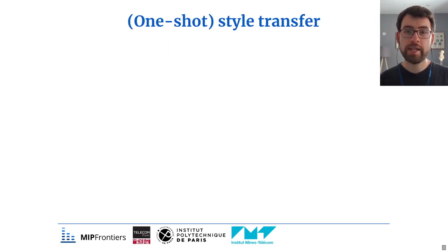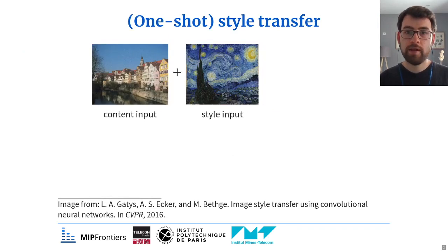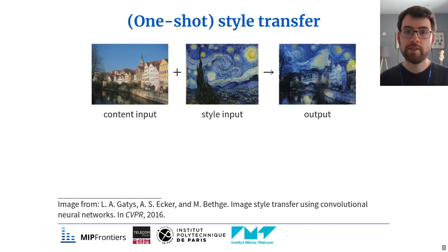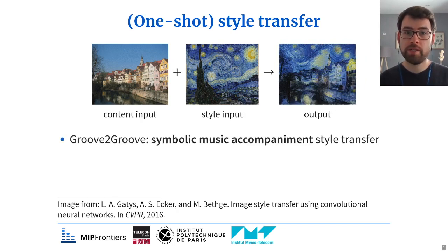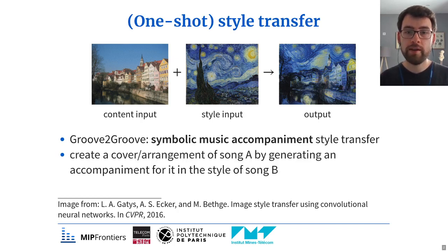Generally speaking, we are tackling a one-shot style transfer task where we are given a content input and a style input, and our goal is to transfer the artistic style of the second input onto the first one. In this work we are not interested in images but rather in musical accompaniments in popular music and jazz. We are also working with a symbolic representation, more precisely MIDI files, which contain information similar to a musical score. Specifically, our goal is to create a cover or arrangement of one song — the content input — by generating a new accompaniment for it in the style of another song, the style input.